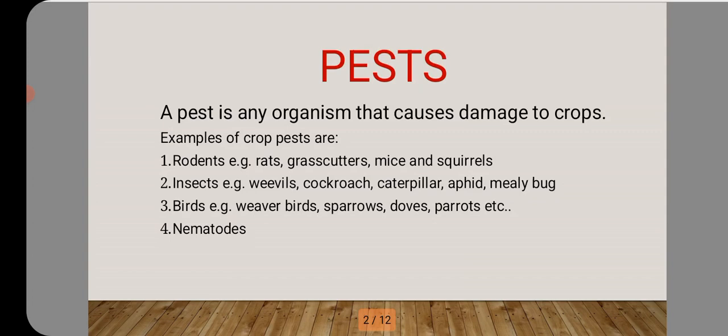These are the four groups of crop pests and each of them has examples under them. Without wasting much time, let's look at the rodents. Examples of rodents are rats, grass cutters, mice, and squirrels.